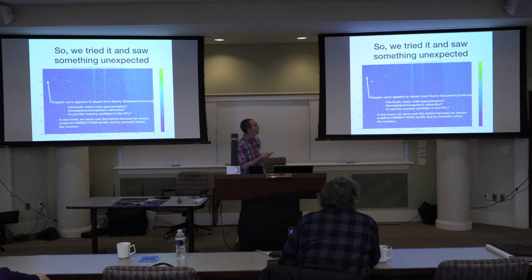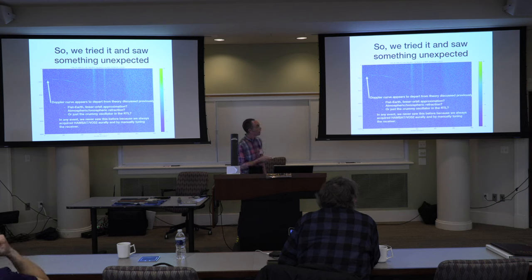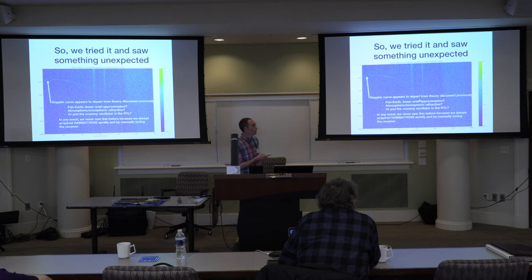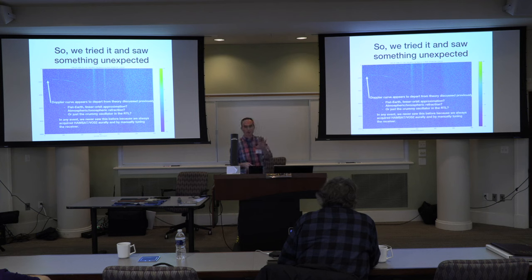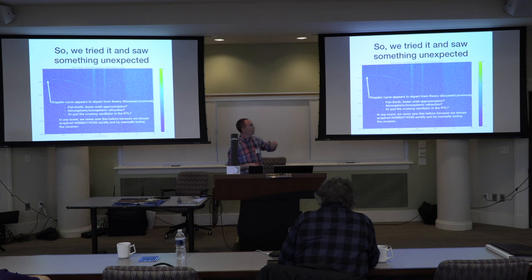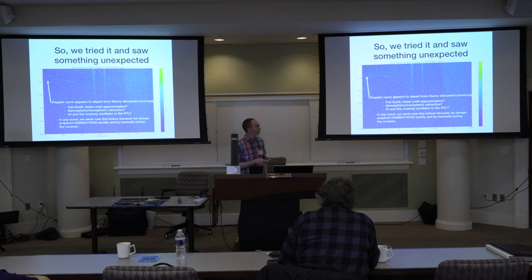The interesting thing here is that we sort of depart from the S-shape — there's a little more or less Doppler shift than one would expect. I was curious: is this the flat-Earth linear orbit approximation we were talking about before? Is it atmospheric and ionospheric refraction? The interesting thing about that is that there are a lot of radio science experiments done on planetary space missions where they use the deep space network to listen to ultra-stable oscillators on the satellites, and they can measure the Doppler shifts due to atmospheric bending through the atmospheres of those planets. That goes back to the 60s, and there are interesting papers publicly available in the NASA astrophysics data archives.